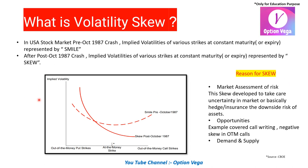Why is this volatility skew happening at different strike levels in the option chain? Let's look at the history. In the US stock market, a crash happened in October 1987. Before that crash, the implied volatility of various strikes at a constant maturity was represented by a smiley shape — the implied volatility of OTM puts and OTM calls was symmetrical about the ATM strike, appearing like a smile.